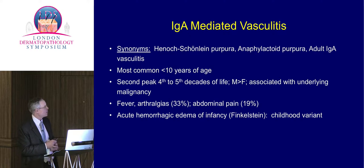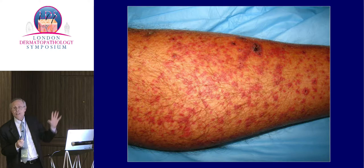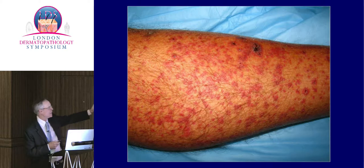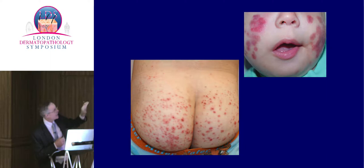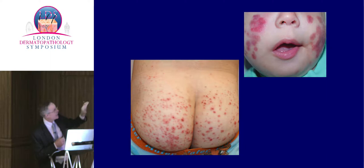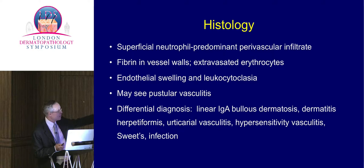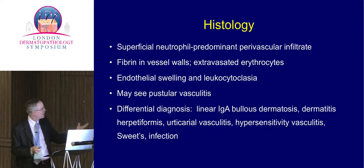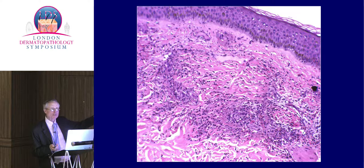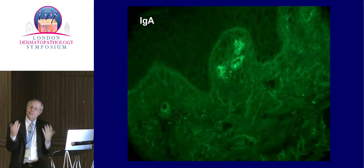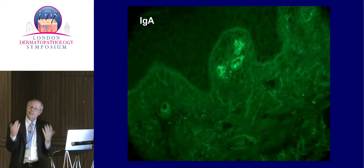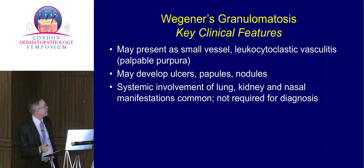IgA-mediated vasculitis has a childhood variant. Of all forms of vasculitis, these tend to produce the greatest number of neutrophils and pustules — so if you see pustular vasculitis, it's probably IgA-mediated. The childhood form — Finkelstein's disease or acute hemorrhagic edema of infancy — presents with hemorrhagic edematous lesions often on the face and buttocks. Histologically it shows the same changes as classic LCV but with generally more neutrophils and possible pustular vasculitis. Immunofluorescence within the first 24 hours will show IgA deposition — after 24 to 36 hours it degrades and you'll get a false negative, so early biopsy is essential.